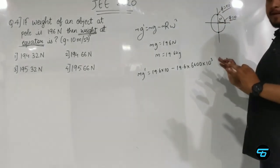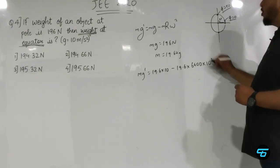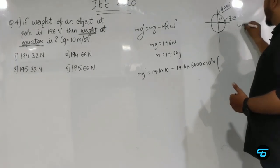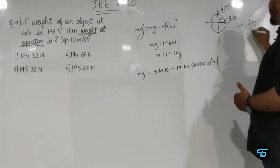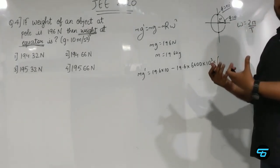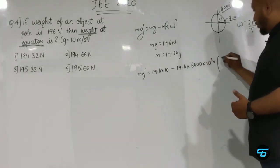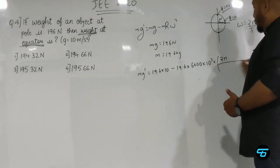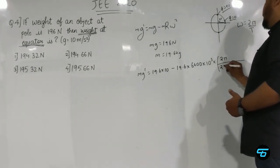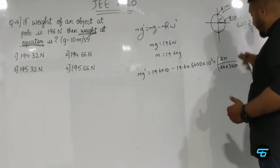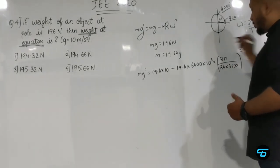Then into omega. Now you'll ask, omega value is not given. Students, for omega we use the formula: omega is 2 pi upon T, where T is the time period of Earth. Earth's rotation time period is 24 hours. So I write this as 2 pi divided by 24 hours. 24 hours equals 24 into 3600 seconds, and this is squared.